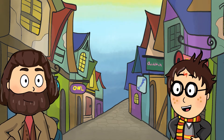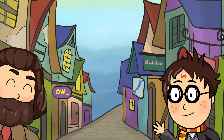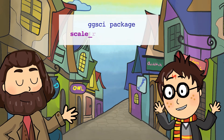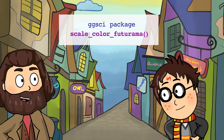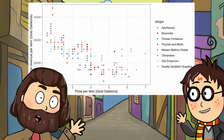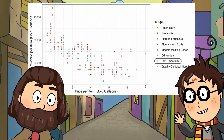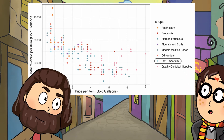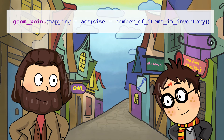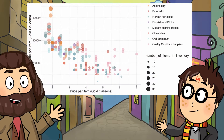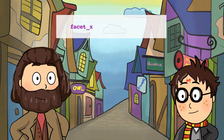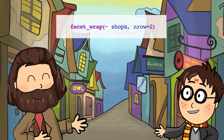The ggsci package has some really cool color palettes. We can use the scale_color_futurama function to apply a color palette based on the Futurama show. I wonder which points represent the Owl Emporium. Here you go! The Owl Emporium data points are in light blue. It is also useful to see how many items per item type are available in the inventory — we can do this by adding size to the aesthetics. Looking great! One of the ice cream flavors must be low in stock. Finally, we can split the plots into facets. Facets are subplots that display a subset of the data.